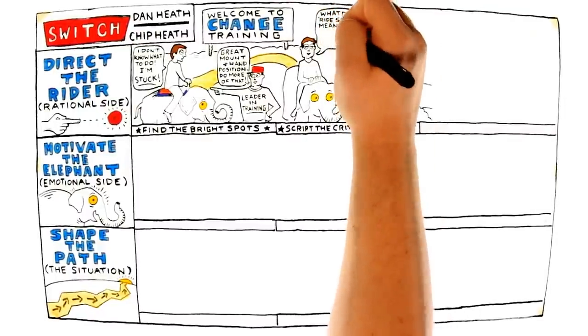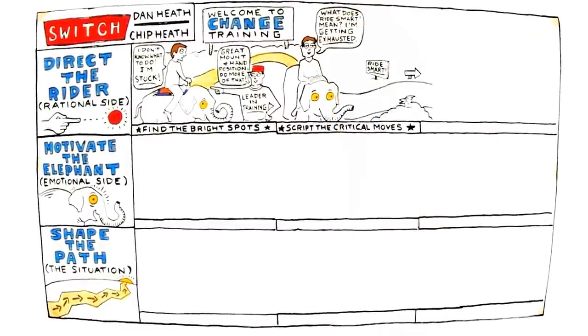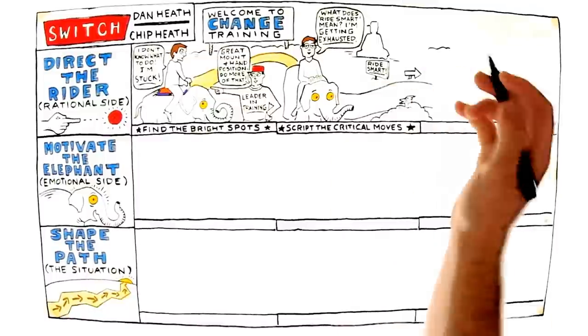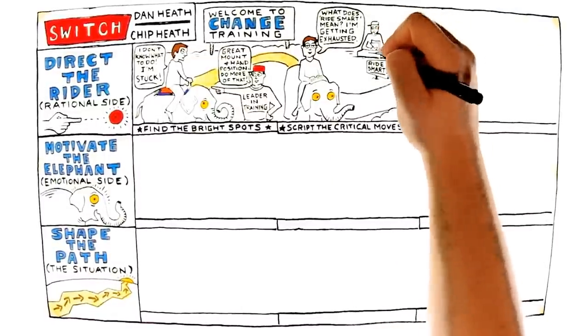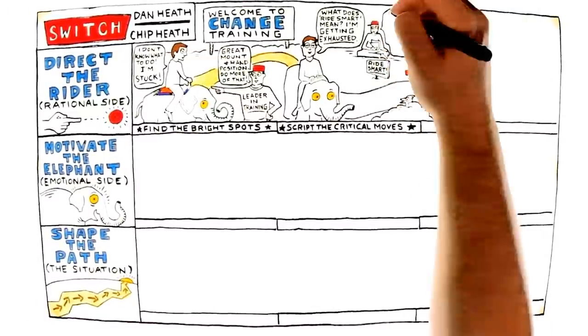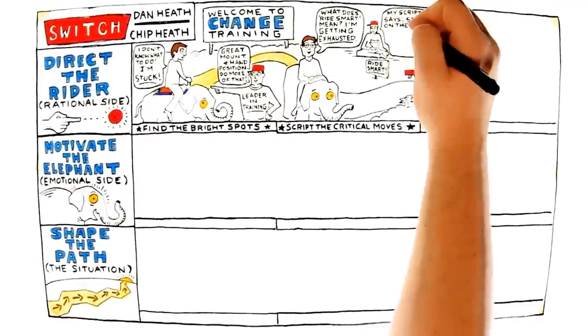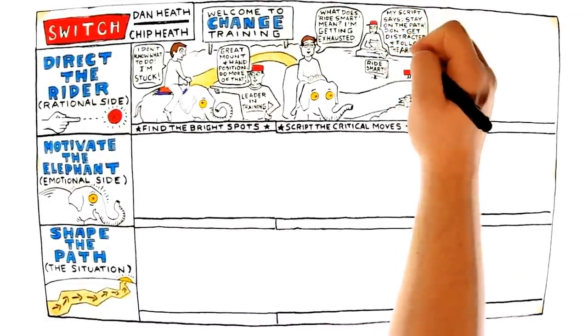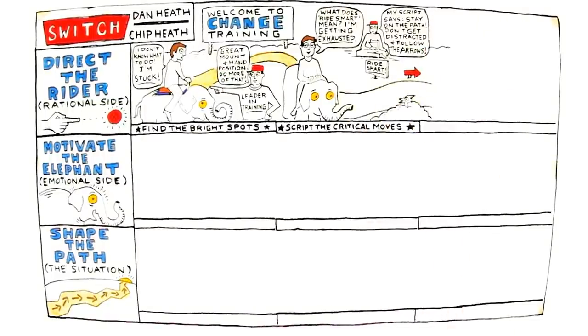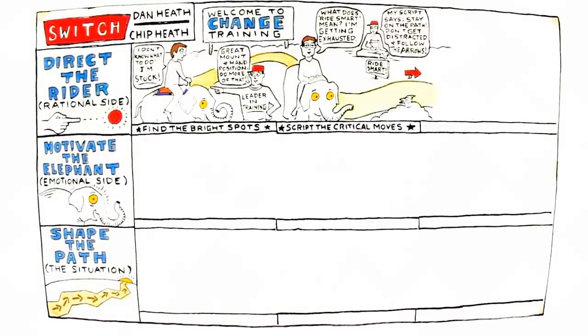Successful change requires translating goals into concrete behaviors. As a leader, you've got to give crystal clear guidance and think about the specific behavior you want to see. The rider in people needs a script as a guide to action. The Heath Brothers state, don't think big picture. Think in terms of specific behaviors you want performed. Clarity dissolves resistance.